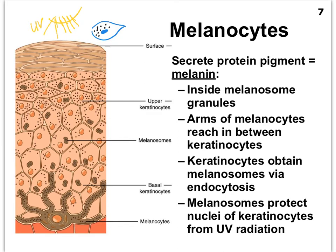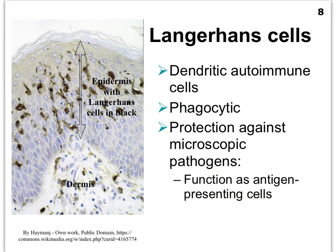The keratinocytes manage to receive these melanosomes by means of endocytosis. If you have forgotten what that means, be sure to look it up, because you'll need to know the terms endocytosis and definitely exocytosis for future lectures.